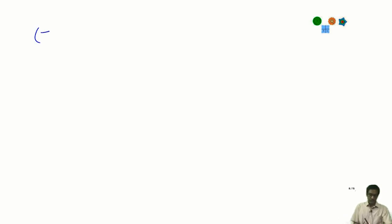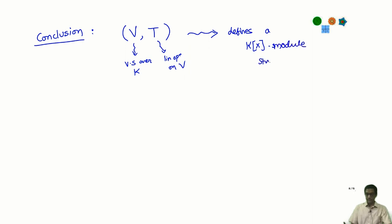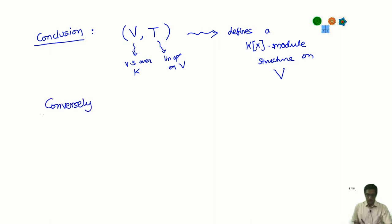We have managed to show that all four axioms hold. Therefore, the conclusion is: if V is a vector space over a field k and T is a linear operator on that vector space, then the pair (V, T) defines a k[x]-module structure on V. In fact, the converse is also true — if I am given a k[x]-module, then from that I can extract a vector space and a linear operator.